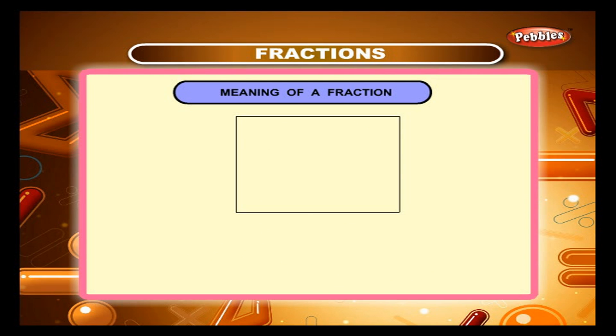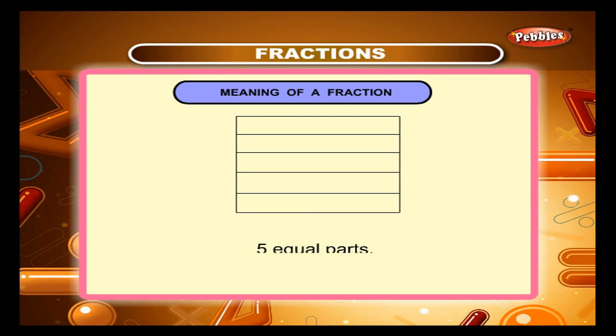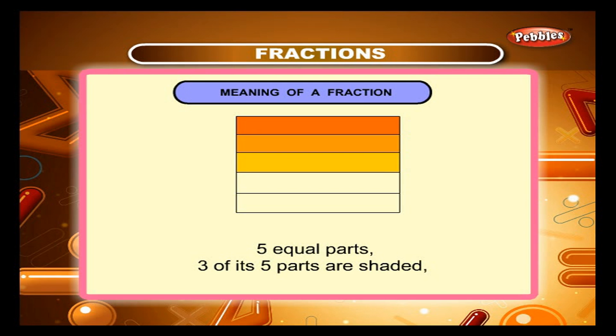In figure 3, which is a square, there are five equal parts. Three of its five parts are shaded. That is, three-fifths of the region is shaded.